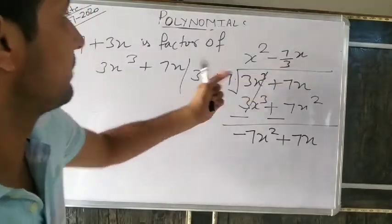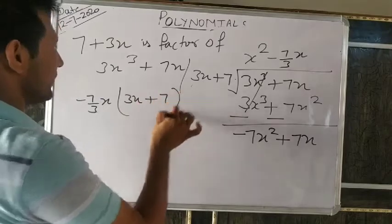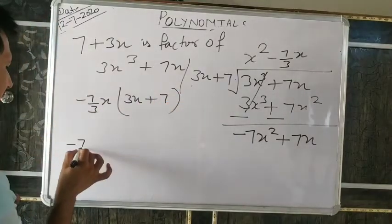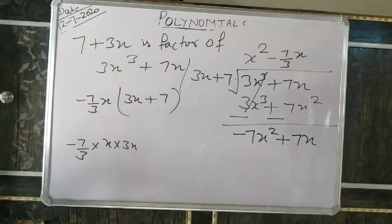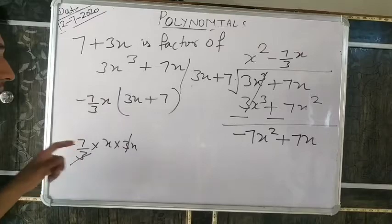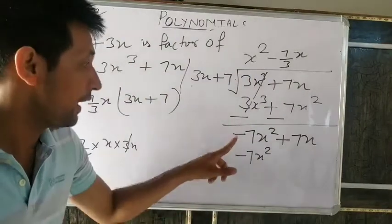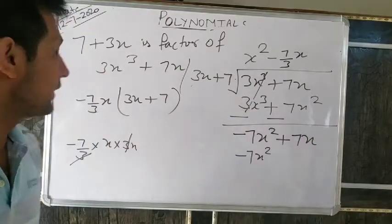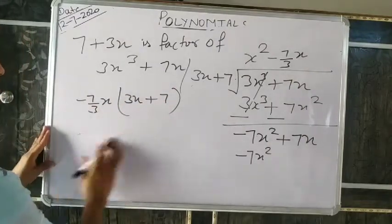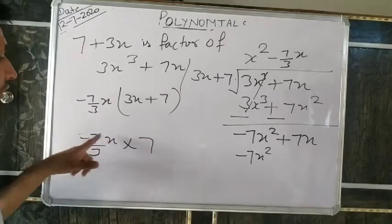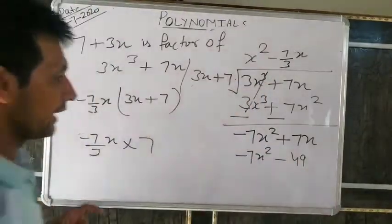Change sign: negative becomes negative (already negative stays), so −(−7x² − 49x/3). Now 7x − (49x/3): these are like terms. Take LCM of 3: 3 divided by 1 gives 3, times 7x equals 21x. So 21x − 49x all over 3. One is positive, one is negative — greater number is 49, so 49 minus 21 equals 28. Remainder is −28x/3.